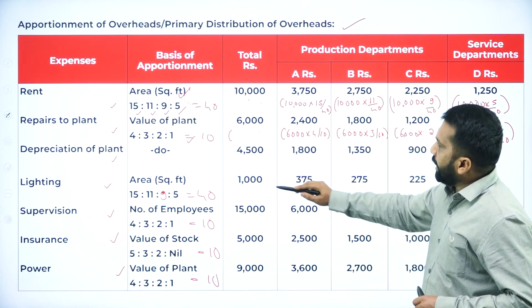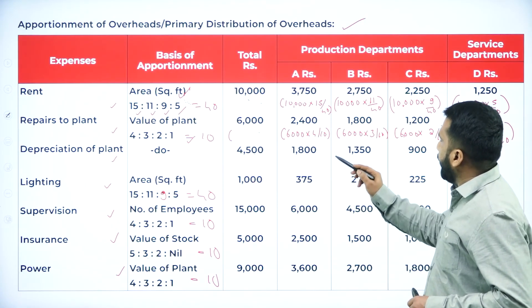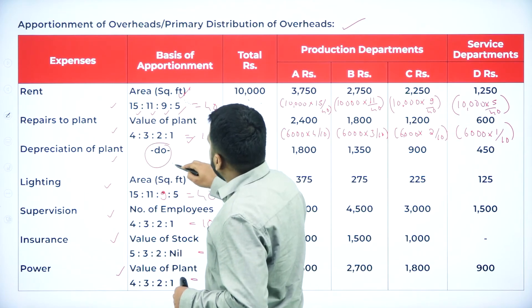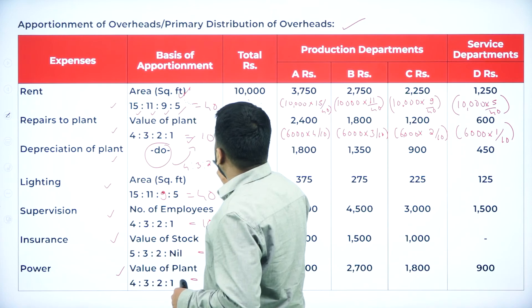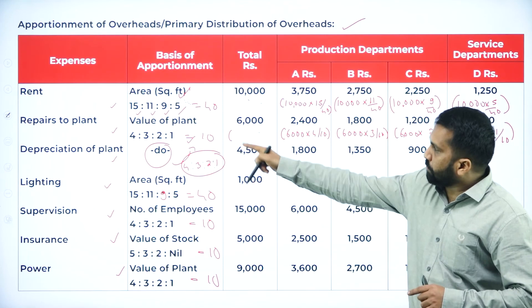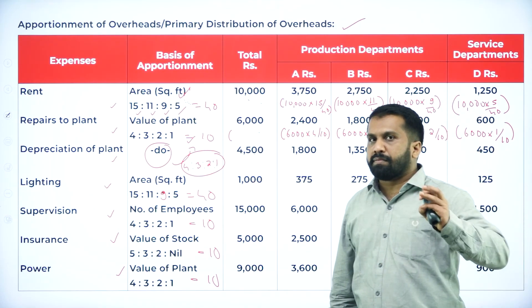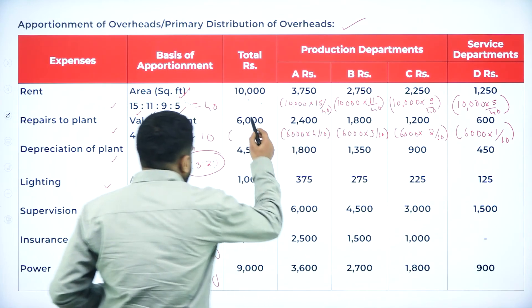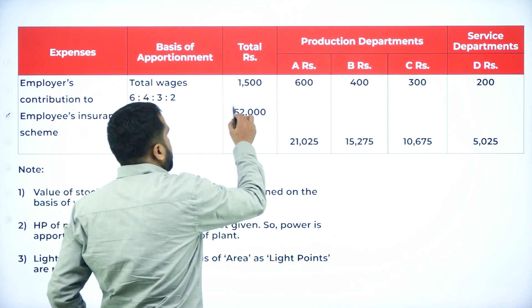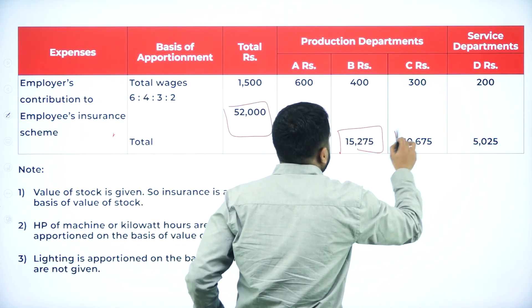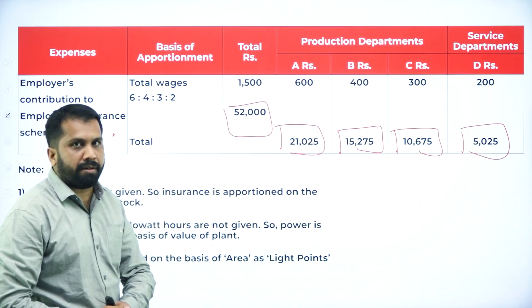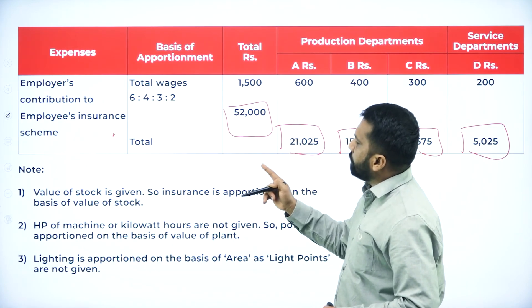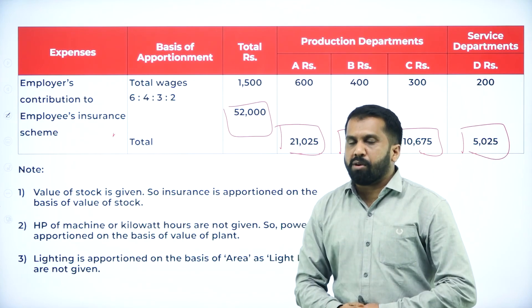Similarly, calculate for depreciation, lighting, and supervision in the same manner. For depreciation of plant, the value of plant ratio is used — same as repairs to plant, which is 4:3:2:1. That's why we write 'do' meaning it is the same as what you have taken for repairs to plant. Repairs to plant and depreciation to plant both come under value of plant only. Once you are done with this, add everything including employee insurance. Your totals are 52,000; 21,000; 15,000; 10,000; 5,000.